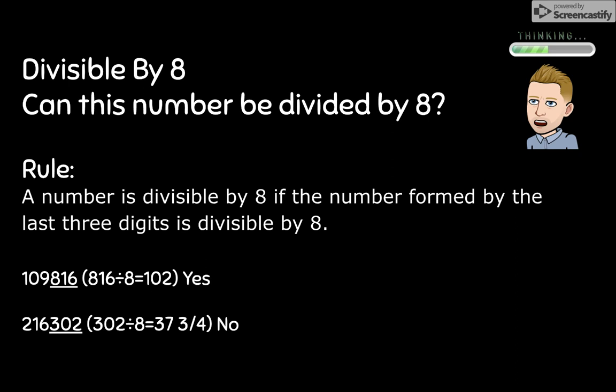And is 216,302 divisible by 8? Look at the last three digits. 302. 302 divided by 8 does not give us a whole number. It gives us 37 and 3 quarters, which is not a whole number. So 216,302 is not divisible by 8.